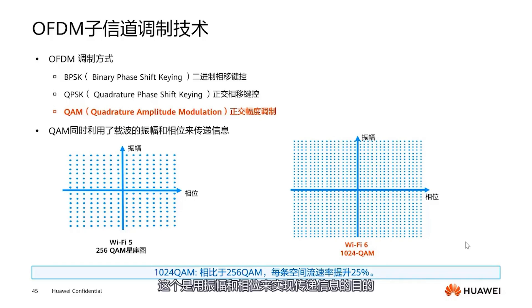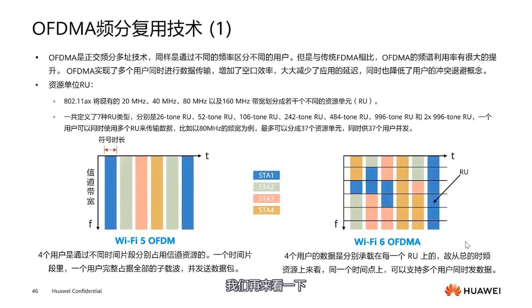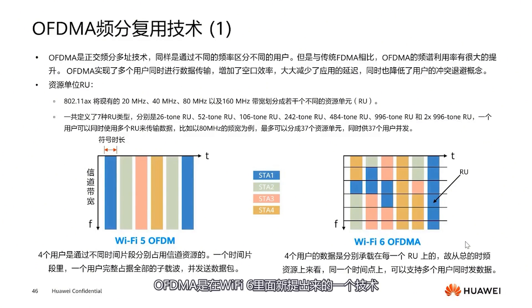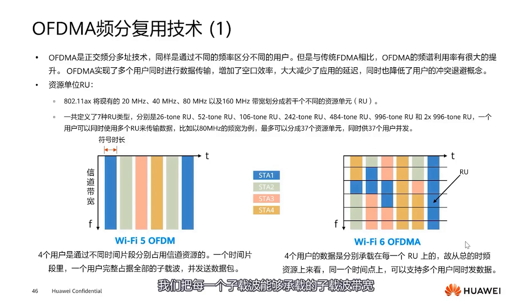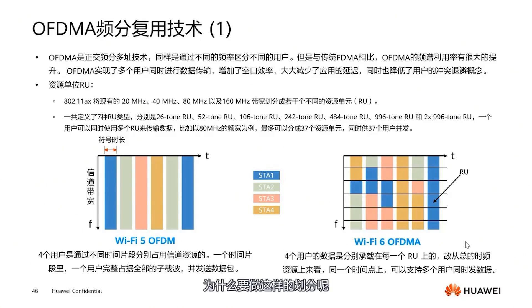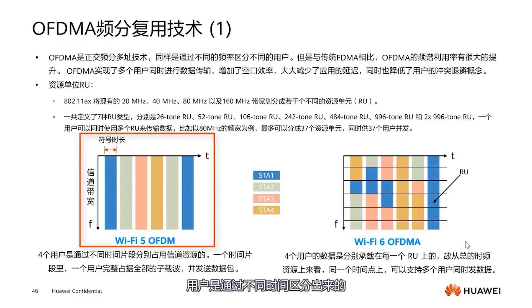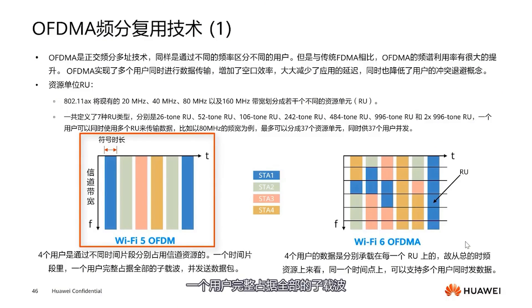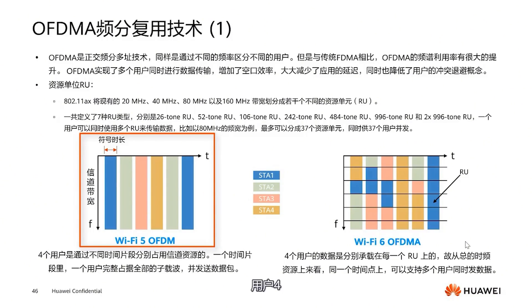Let's examine what OFDMA technology is. OFDMA is a new technology introduced in Wi-Fi 6, known as Orthogonal Frequency Division Multiple Access. Within Wi-Fi 6, we have reduced the bandwidth each sub-carrier can carry from 312.5 kHz to 78.125 kHz. In Wi-Fi 5, users were distinguished by different time slices — each time slice, a user fully occupies all sub-carriers and sends a complete data packet. Different colors represent different users: user 1 finishes, then user 2 follows, then user 3 and user 4, meaning within a single time slot only one user transmits.